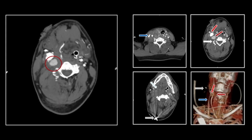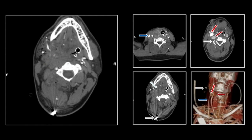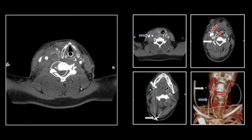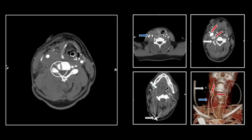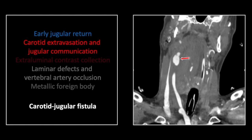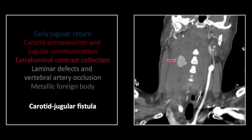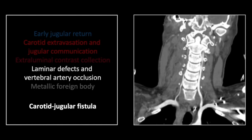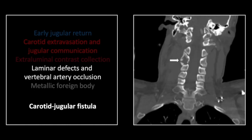The second lobe of that bilobed pseudoaneurysm is visible there. More posteriorly, you can see the damage to the vertebral column and the absent right vertebral artery contrast column. Here is the offending bullet trapped beneath the skin in the posterior cervical soft tissues. Note again that early venous return. The second lobe of that bilobed pseudoaneurysm is visible, and let's note that vertebral artery contrast column which we lose right there. On the coronals, you can appreciate again the early jugular venous return.